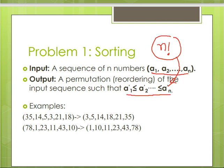Naturally, if we increase the value of n, the total number of permutations increases drastically, and hence we require some mechanism to figure out which permutation is the sorted permutation corresponding to the given input. For example, if the input is [35, 14, 5, 3, 21, 18] then the output must be [3, 5, 14, 18, 21, 35], and similarly for other inputs the output must be in sorted order.